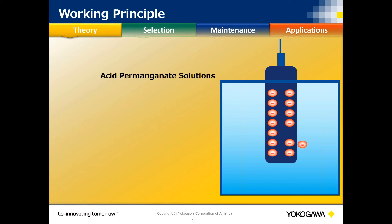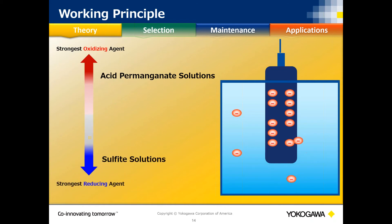Looking at the working principle on a noble metal with a reference system: a strongly oxidizing acid permanganate solution strongly attracts electrons from the noble metal electrode, generating a highly positive millivolt value. The opposite — a sulfite reaction — is strongly reducing, pushing electrons into the metal and generating a strongly negative millivolt value.